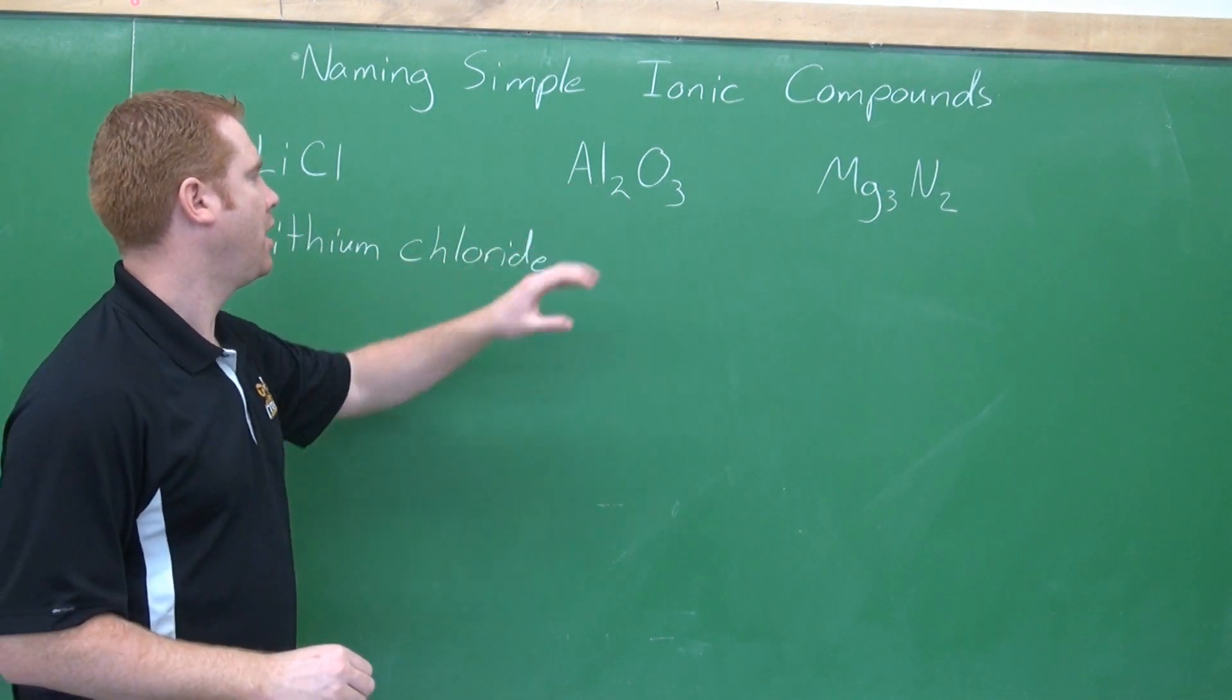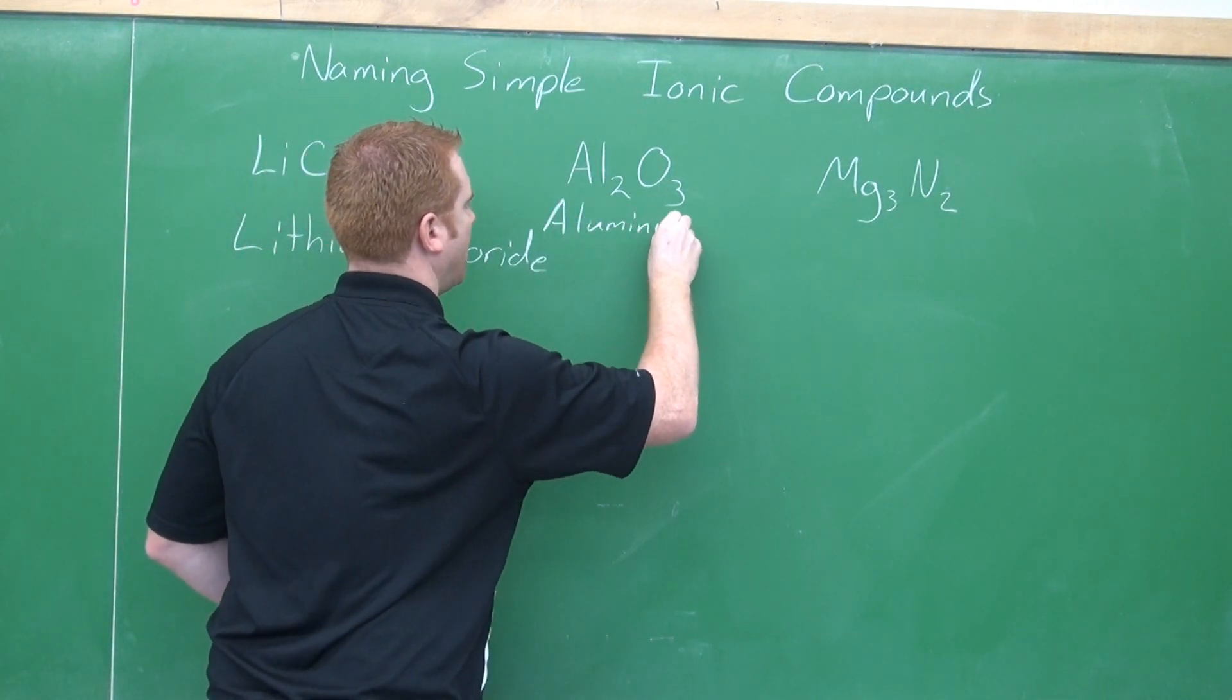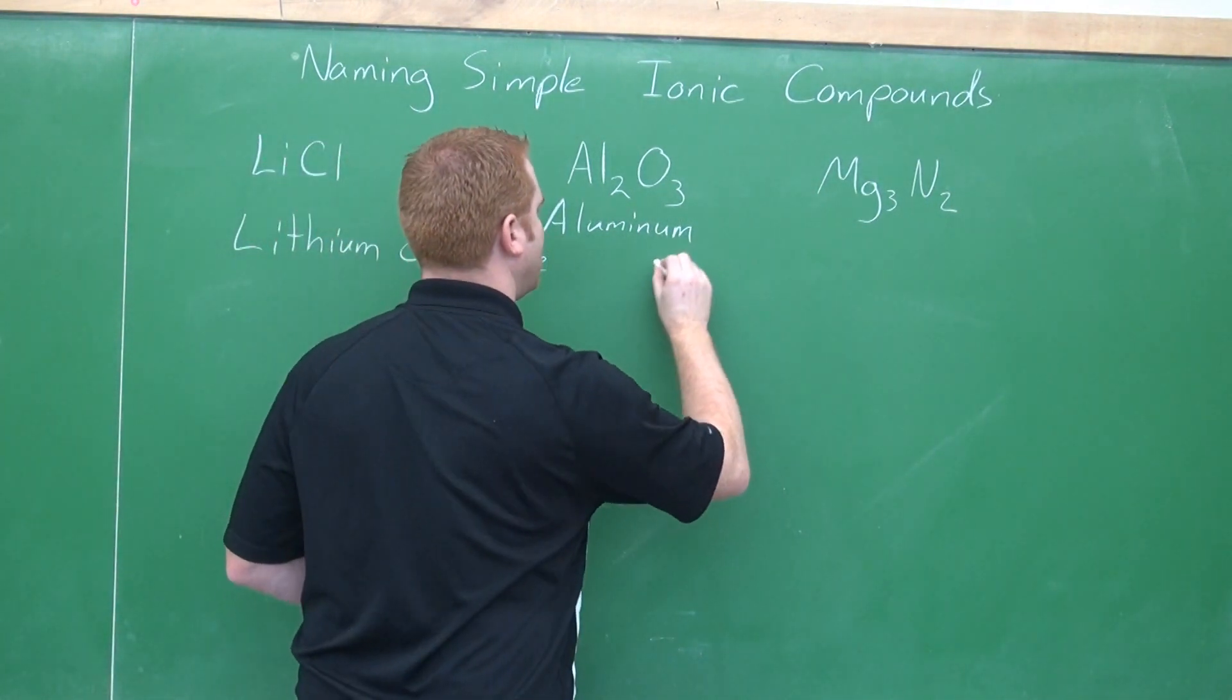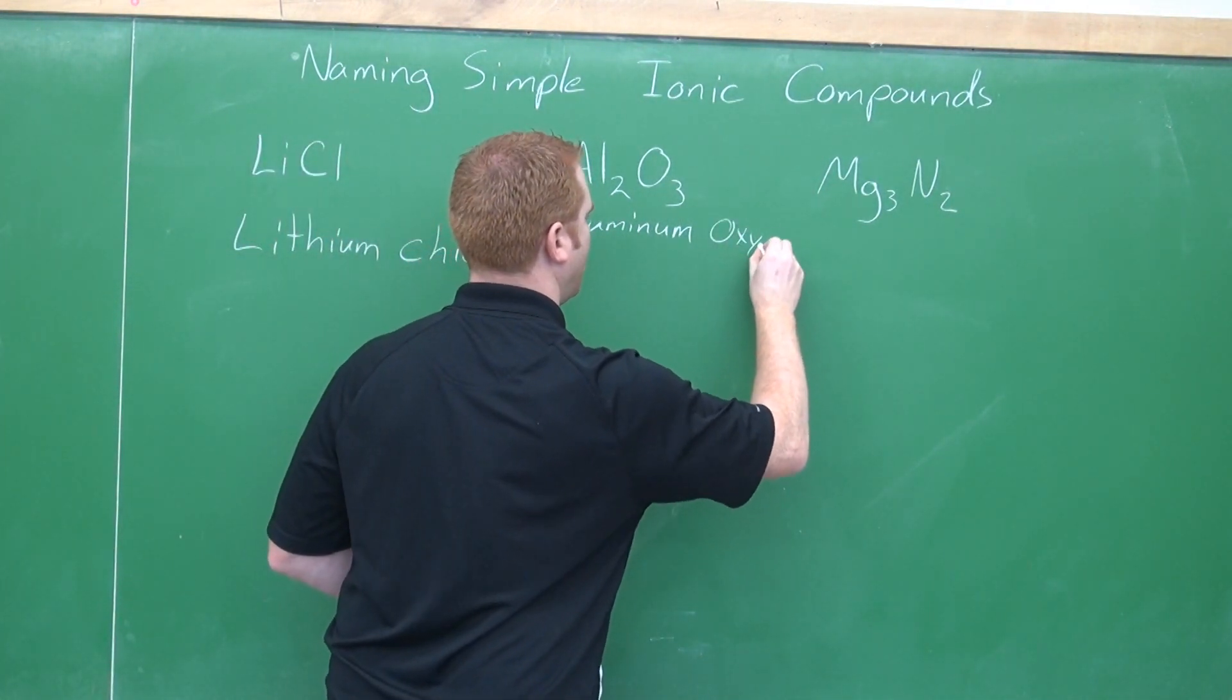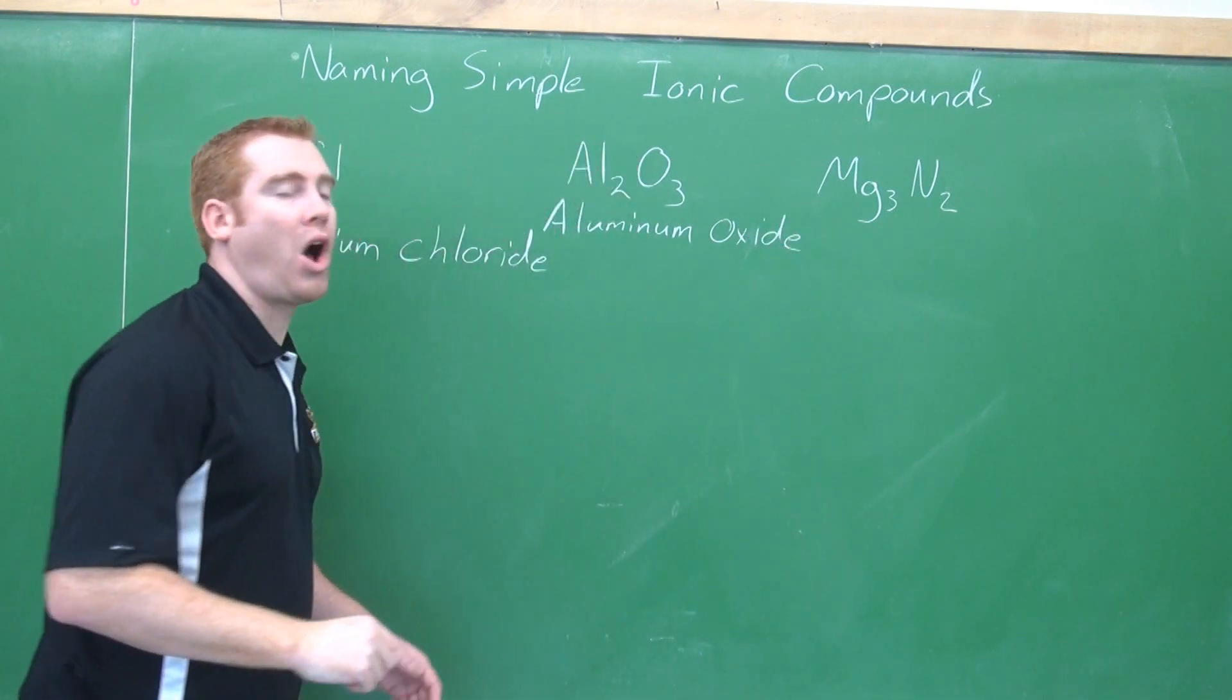Aluminum and oxygen. I write down the name of the metal first, aluminum. And then oxygen, we're going to change that. We're going to add I-D-E. It's going to be oxide.